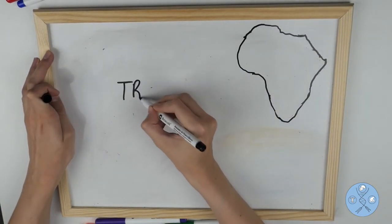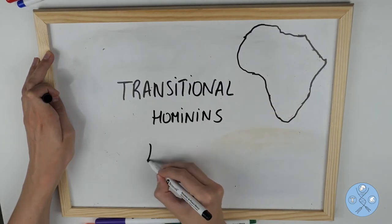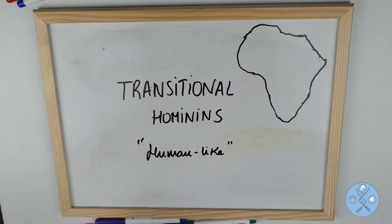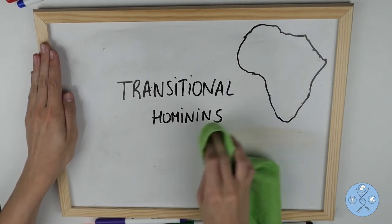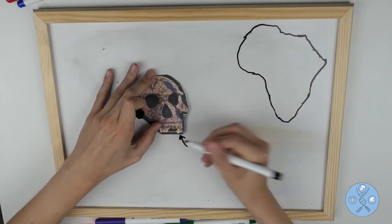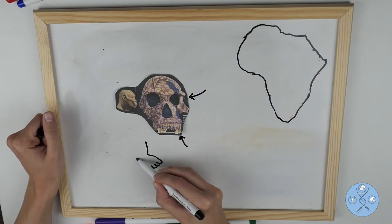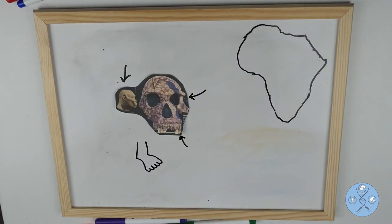The last type we are going to talk about are transitional hominins, and if you remember, these ones refer to organisms that seem to be part archaic hominins and part homo. Okay, so a year later in Tanzania, two scientists made the discovery of a much more human-like early hominin than the archaic hominins mentioned before.